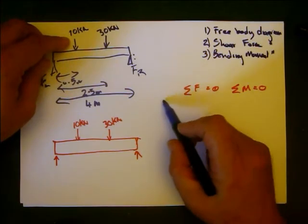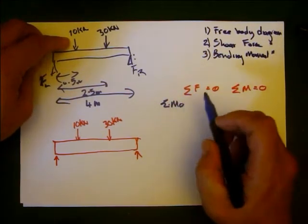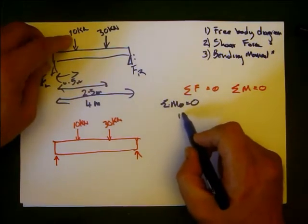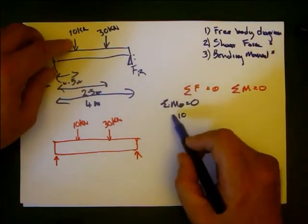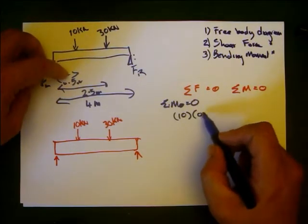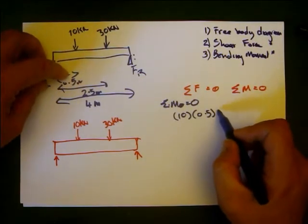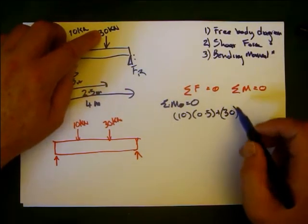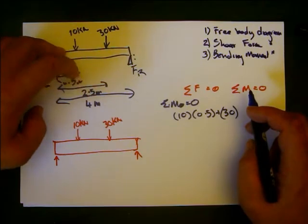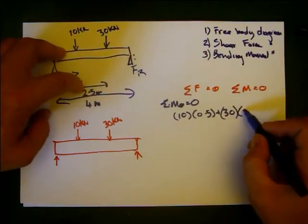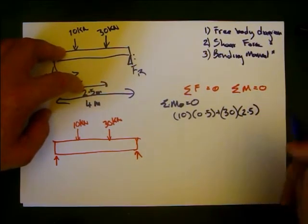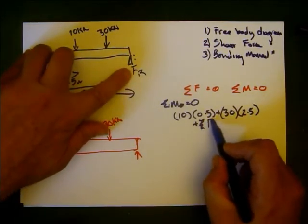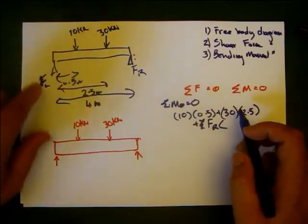So we know that sum of moments equals zero. That means 10 kilonewtons times the distance 0.5 meters plus that force 30 kilonewtons times 2.5 meters plus force right times 4 meters equals zero.